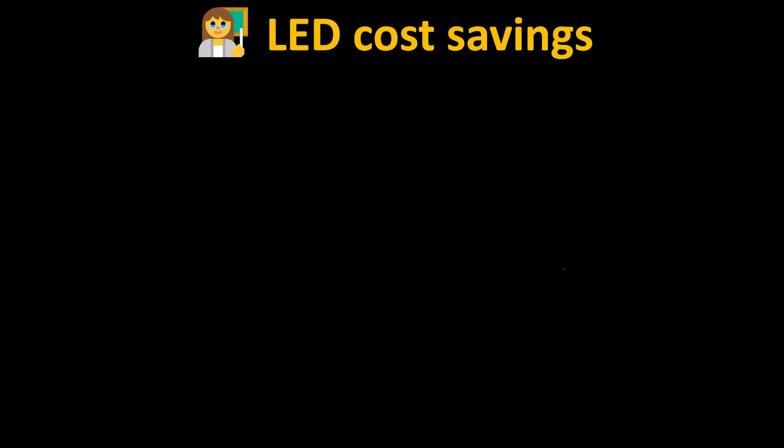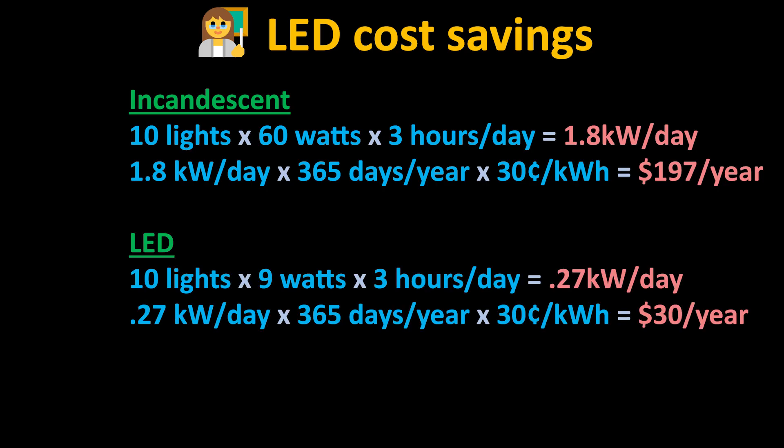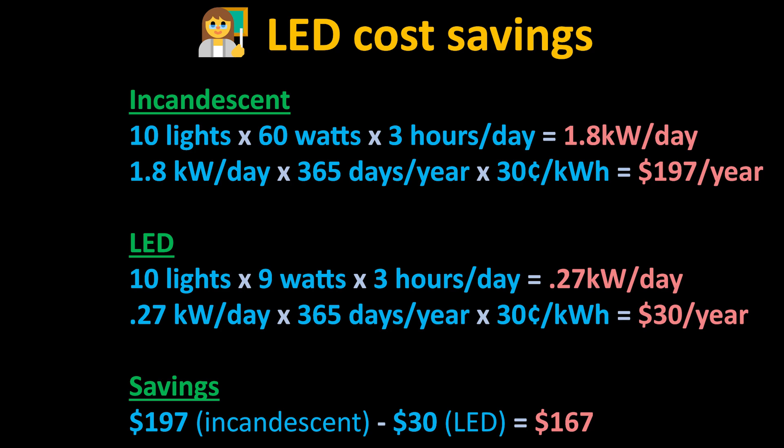So that's about six times more efficient than an incandescent. If you replace 10 bulbs in your house, you go from 600 watts to 90 watts. Assuming you run them at three hours a day at 30 cents per kilowatt hour, the incandescents will cost you $196 per year. The LEDs, $30 per year. It's $166 in savings per year just for 10 bulbs. And here's the hidden bonus.